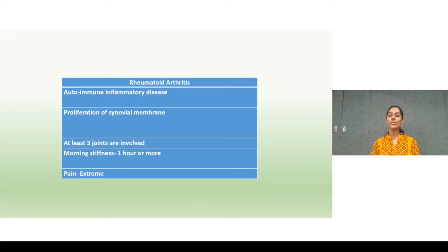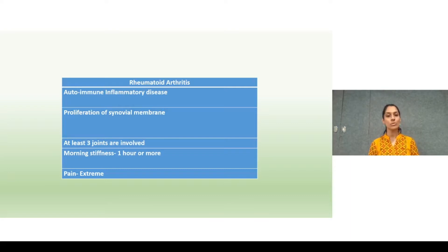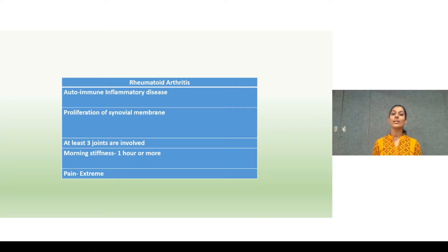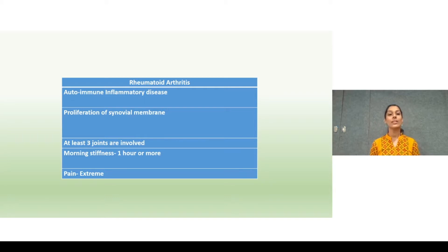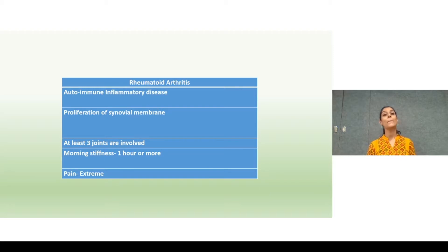First of all, what is rheumatoid arthritis? Rheumatoid arthritis is an autoimmune disease which causes proliferation of the synovial membrane. It involves at least three joints and it causes morning stiffness for about one hour or more, and the pain induced due to rheumatoid arthritis is extreme.